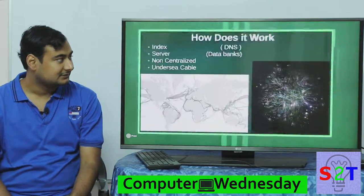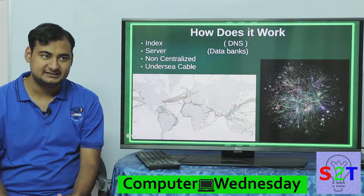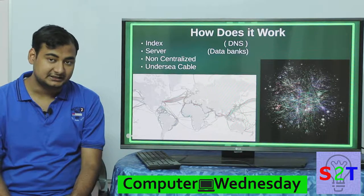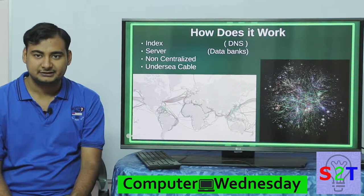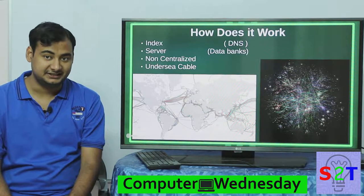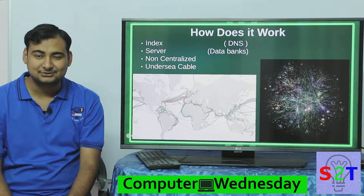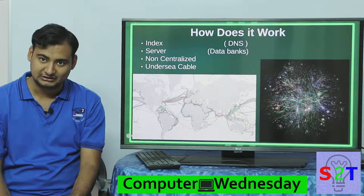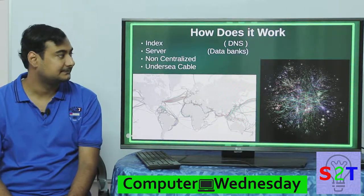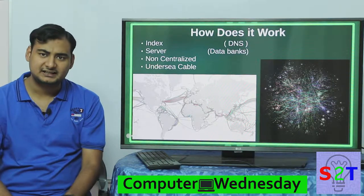So how does it work? You have to understand there are many steps or layers to the internet. One primary layer is that you can only remember names of things, not numbers. So there has to be an index — we generally call this the Domain Name Server. Computers like numbers and we like words, so there has to be indexing. That's the first layer of the internet.